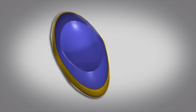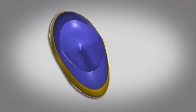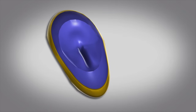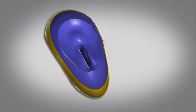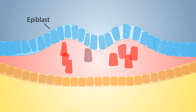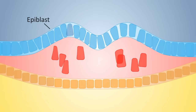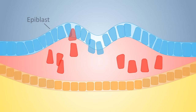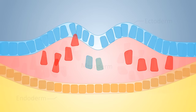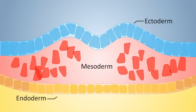In the third week of development, a streak is created on the surface of the epiblast, during which time the cells of the epiblast detach and migrate. These migrating cells create three layers — the ectoderm, mesoderm, and endoderm layers — which go on to contribute cells to form all the tissues and organs in the human body.